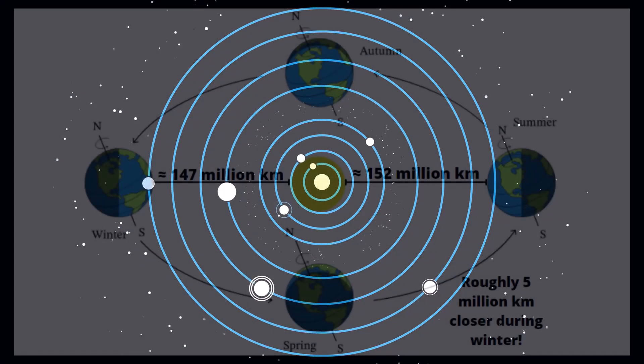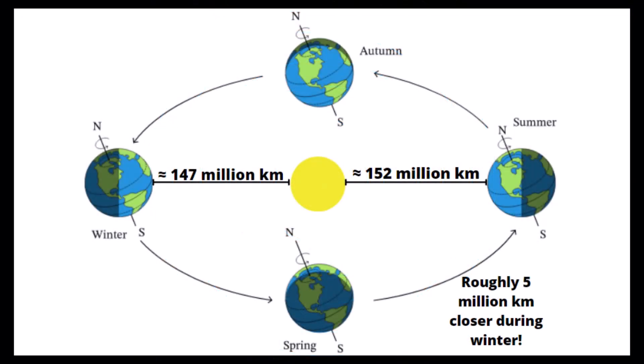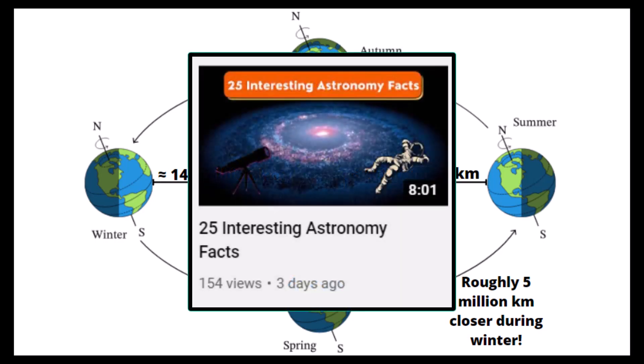This leads to Earth being closer to the sun at one point in the year and furthest at another. Interestingly, Earth is closest during winter in the northern hemisphere and furthest during summer. This was one of the astronomy facts covered in my last video which I'd suggest watching once you're done with this one.